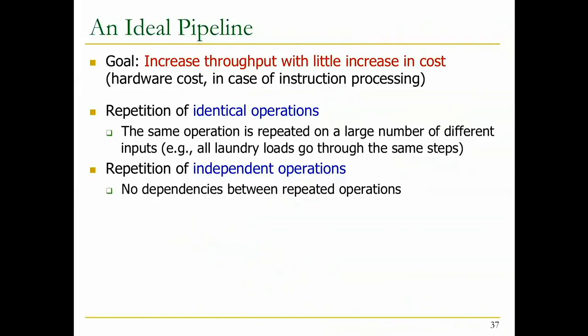Independence is very important - you should not have dependencies between repeated operations. Laundry loads can be pipelined very well because they're independent of each other. If instructions are independent that's good, but if they're dependent - if you need to do a multiply that depends on an add, or a multiply that needs the result of a load - you may not be able to start the multiply before the load result is available. If the load takes 500 cycles especially, now you have a problem.